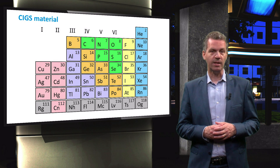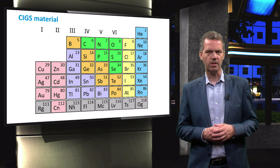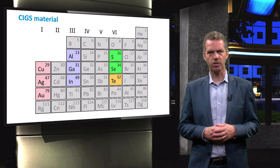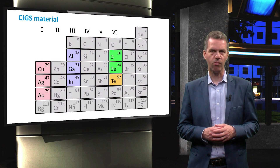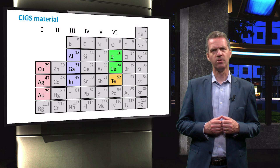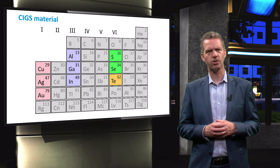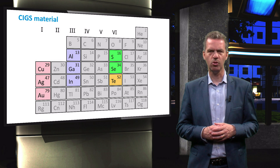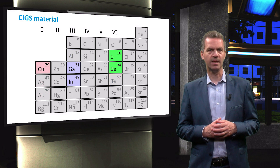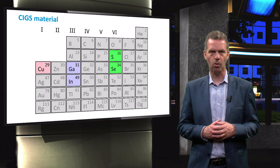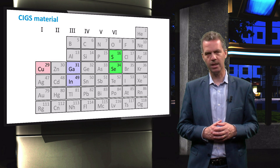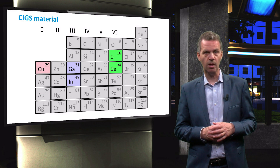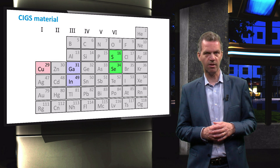Now we know the potential of CIGS-based solar cells, let's start with the chemical composition and structure of this material. Chalcopyrite materials consist of elements in group 1, 3 and 6. Many combinations of the elements shown here are potential solar cell materials. However, the electronic band gap of most materials is too wide. The most common combination is a mixture of copper-indium diselenide or CIS and copper-gallium diselenide or CGS. Also sulfur can be included in the structure, partially replacing the selenide fraction in the material.